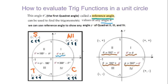Here is the formula. For the first quadrant, all the angles are reference angles. For the second quadrant, we use 180 minus that angle to get the reference angle. For the third quadrant, any angle minus 180 degrees gives the reference angle. For the fourth quadrant, 360 degrees minus that angle gives the reference angle. Remember, we use 180 degrees and 360 degrees to find the reference angle.